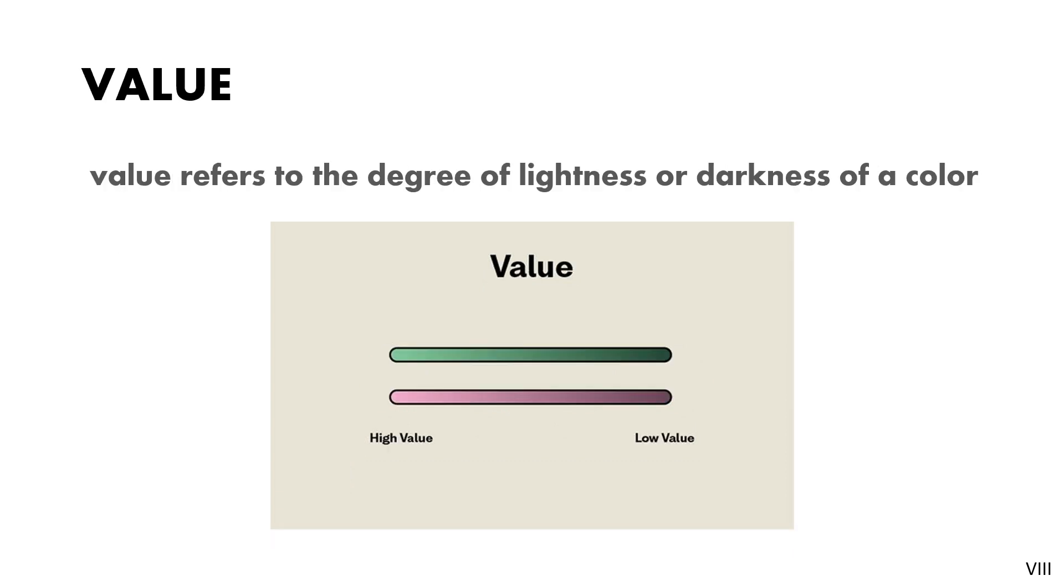Next is value. Value refers to the degree of lightness or darkness of a color. In more simple words, value is the transparency of a color or hue. Less transparency means high value, and high transparency means low value.